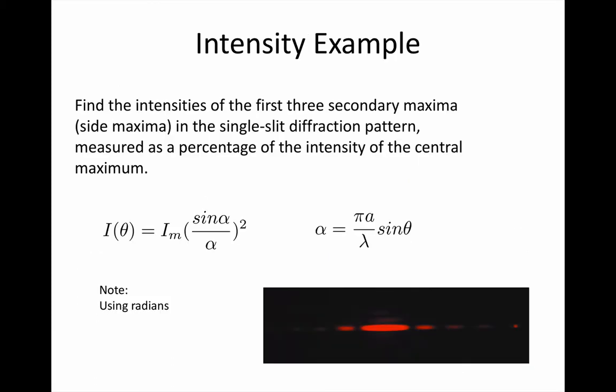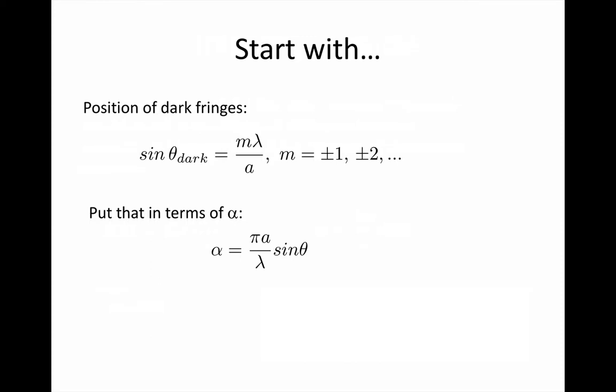Now, we're going to work through an example. We will find the intensities of the first three secondary maxima in a single slit diffraction pattern as a percentage of the intensity of the central maximum. We're going to start by finding the positions of the first dark fringe, so the M equals one fringe on either side, since they bound the central maximum. The rest we'll be working through on the tablet.